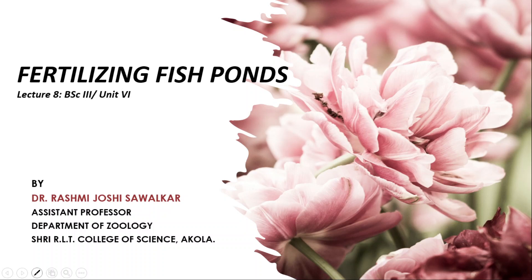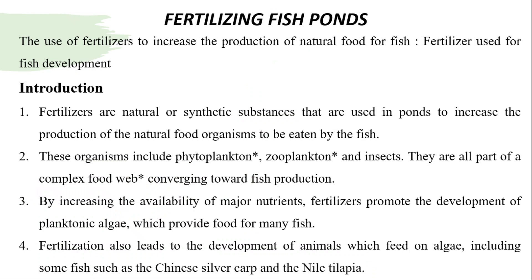Fertilizing fish ponds refers to the use of fertilizers to increase the production of natural food for fish and for fish development. Fertilizers are natural or synthetic substances used in ponds to increase the production of natural food organisms eaten by the fish. These organisms include phytoplankton, zooplankton and insects — all part of the complex food web converging towards fish production.